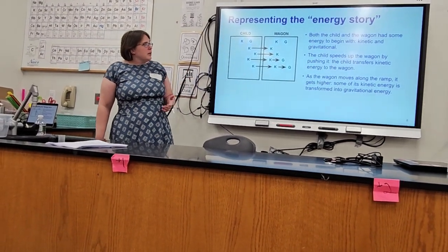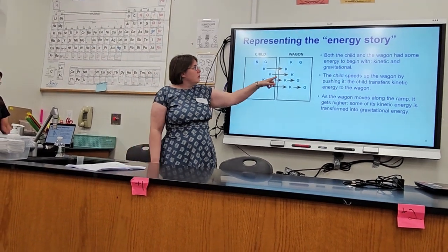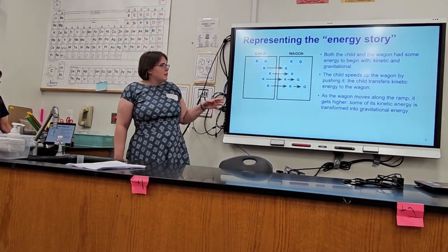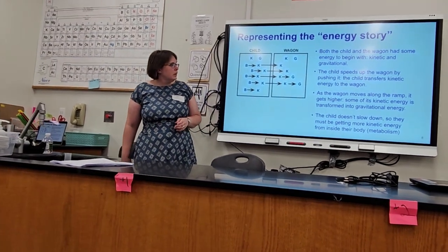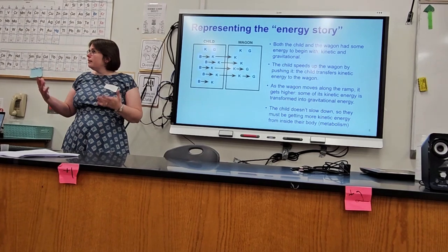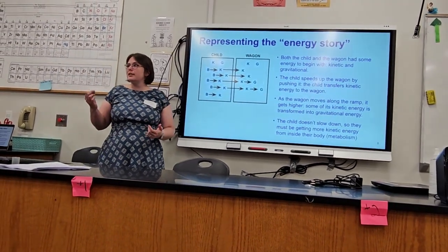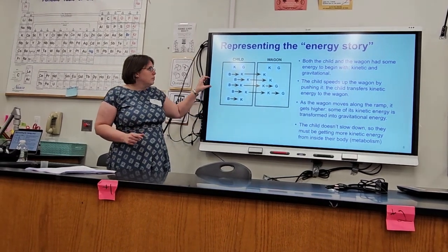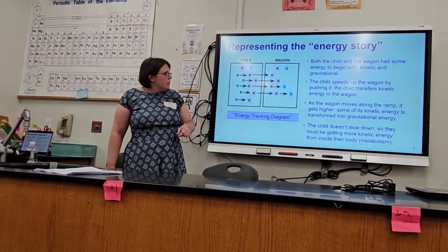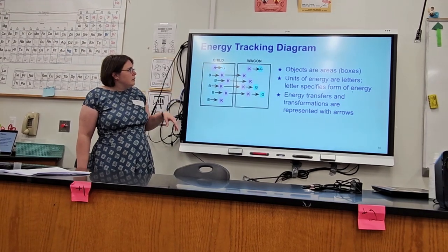I don't know if they're going to change that with the Regents, because I'm thinking like the tie-in with the living environment. Like our new curriculum says where does the child get his energy from? The potential energy from the food that he eats, from the metabolism and things like that. So the child speeds up the wagon by pushing it, the child transfers kinetic to the wagon. And then as the wagon moves along the ramp, it gets higher and some of that kinetic energy, and notice it's still within this box of the wagon, the kinetic then is transformed into the gravitational. And then the child doesn't slow down, so they must be getting more kinetic energy from their body. So that is included there, so that they understand that energy is never created or destroyed.